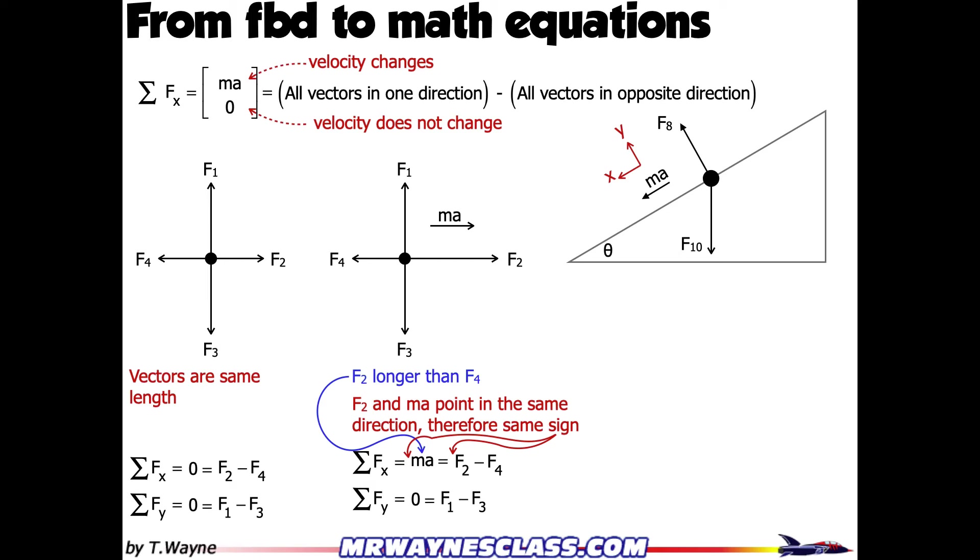F10, no. Not parallel or perpendicular to either one of these. So what I've got to do is make F10 into a triangle where F10 is the hypotenuse of that triangle. One leg of the triangle has to be perpendicular to the incline. The other leg has to be parallel to the incline. Now I've got to figure out what the angles and the magnitudes are.